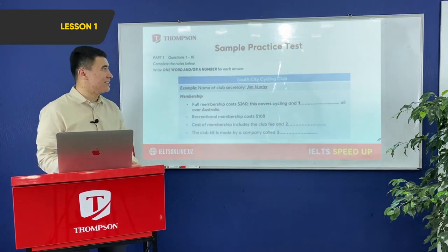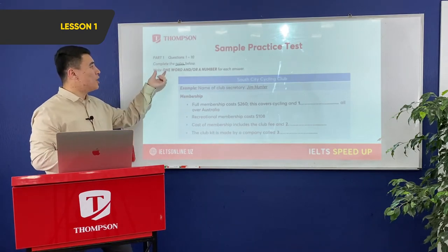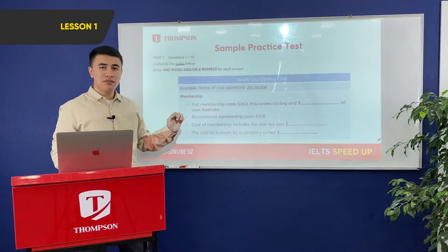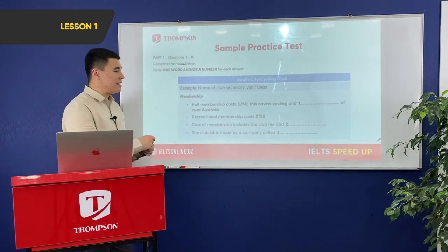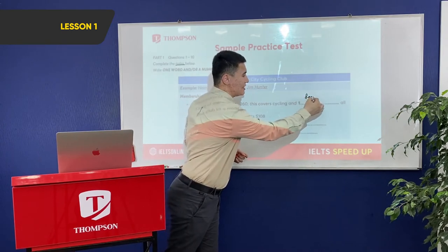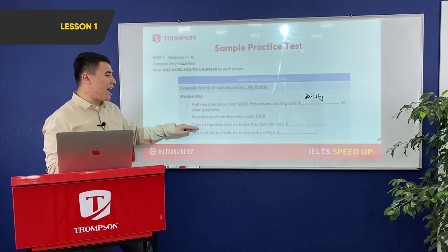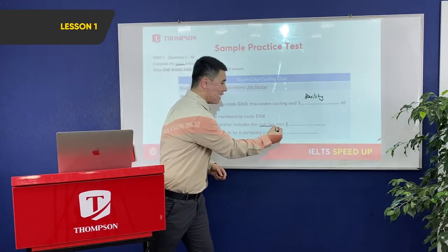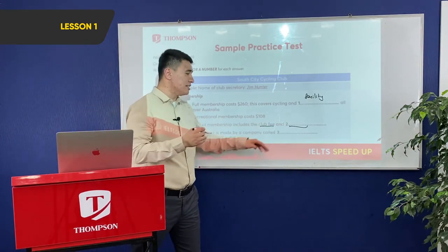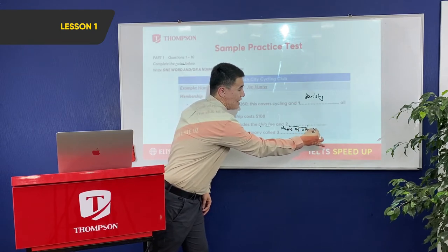Let's move to the next practice: note completion. The instructions are the same — one word and/or a number. The note shows that full membership costs $260, covering cycling and one more facility all over Australia. Question two asks for what the cost of membership includes — the club fee and one more item. Question three asks for the name of the company that makes the club kit.